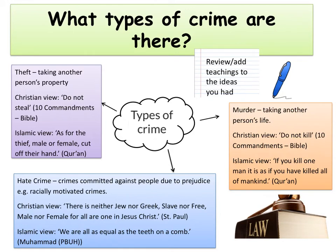Finally we have hate crimes — crimes committed against people due to prejudice, for example racially motivated crimes. Any religious idea showing that everybody is equal will go directly against hate crimes. In terms of Christianity, we can use: there is neither Jew nor Greek, slave nor free, male nor female, for all are one in Jesus Christ — from St Paul. In terms of the Islamic view, we could use the teaching from Muhammad, peace be upon him: we are all as equal as the teeth on a comb. Both teachings show that everybody should be treated equally, so hate crimes would be wrong.